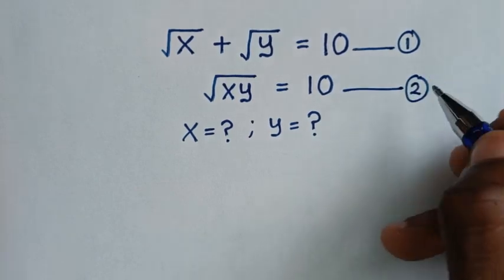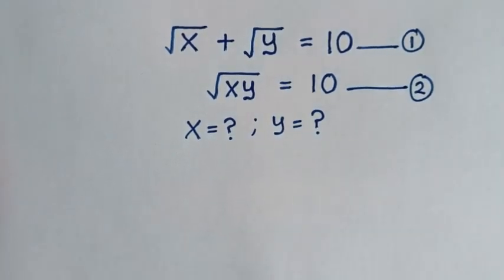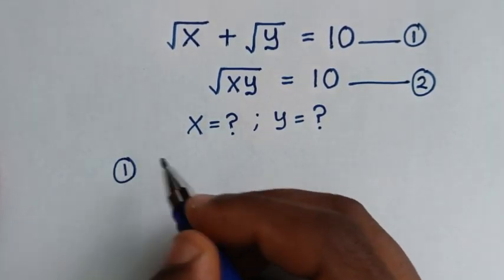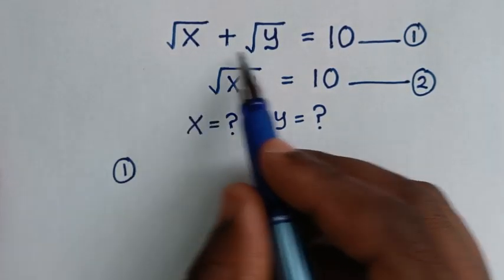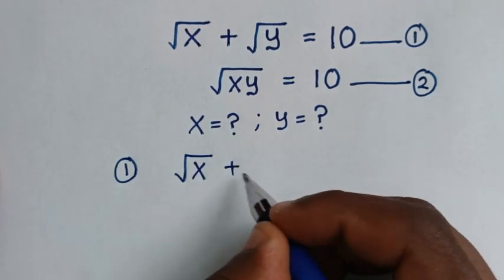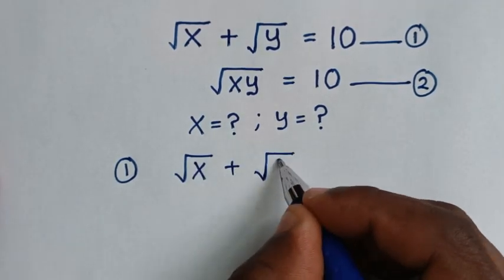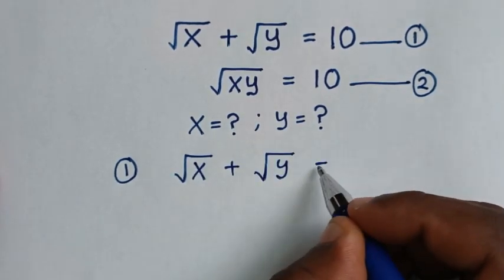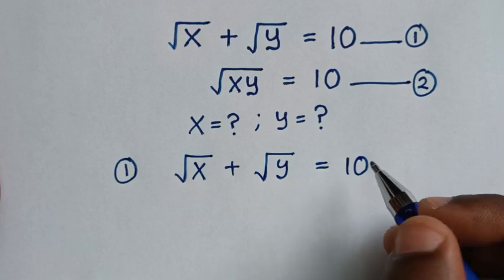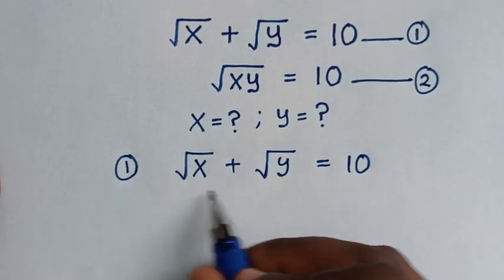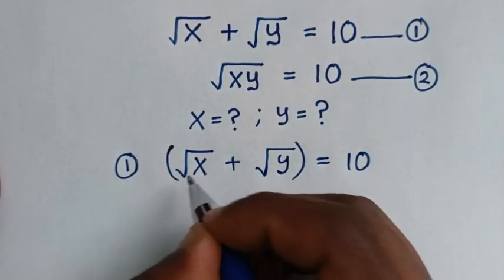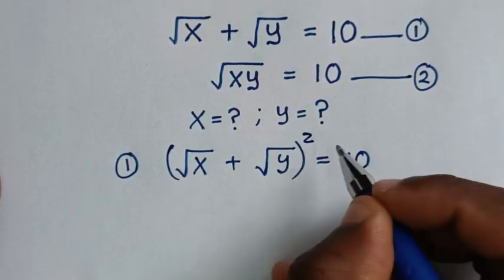Starting from equation 1, which is √x + √y = 10. From this equation, we'll square both sides.